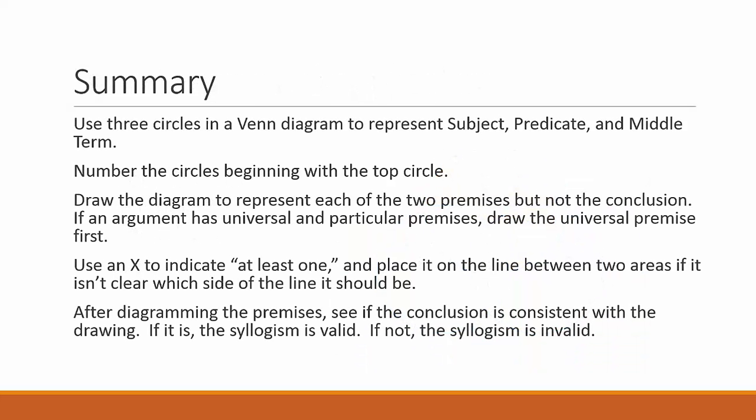In summary: use three circles in a Venn diagram to represent subject, predicate, and middle term. Number the circles beginning with the top circle. Draw the diagram to represent each of the two premises, but not the conclusion. If an argument has universal and particular premises, draw the universal premise first. Use an X to indicate at least one, and place it on the line between two areas if it isn't clear which side of the line it should be. After diagramming the premises, see if the conclusion is consistent with the drawing. If it is, the syllogism is valid; if not, the syllogism is invalid.